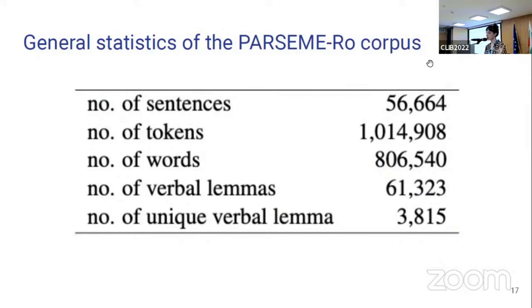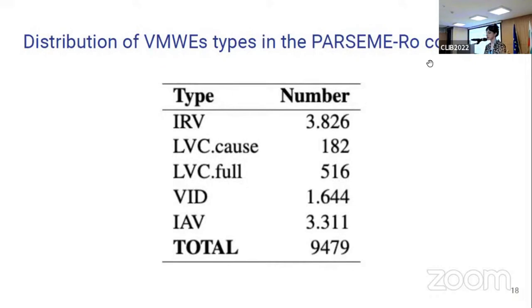In this table you can see the size of the corpus — how many tokens and how many verbal lemmas we have — and the distribution of the PARSEME corpus. In first place you have inherently reflexive verbs, which amount to almost 4,000 cases. Secondly, our category of the day: inherently adpositional verbs, with a little over 3,000 cases. In the case of verbal idioms, you would have a little over 1,500 cases.